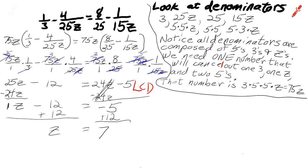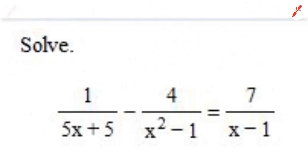Let's move on. Now we're going to solve this rational equation. And this is a college algebra level rational equation: 1 over 5x plus 5, minus 4 over x squared minus 1, equals 7 over x minus 1.